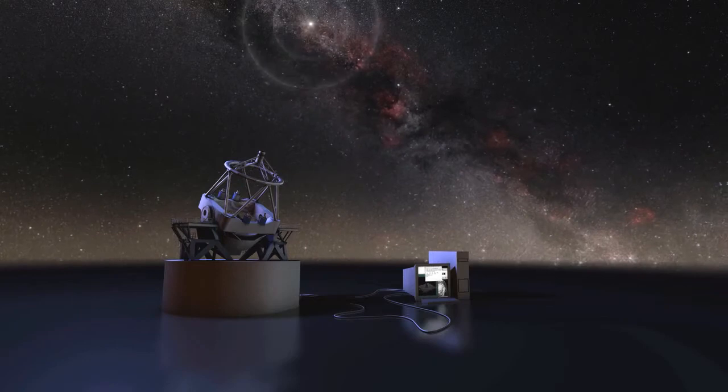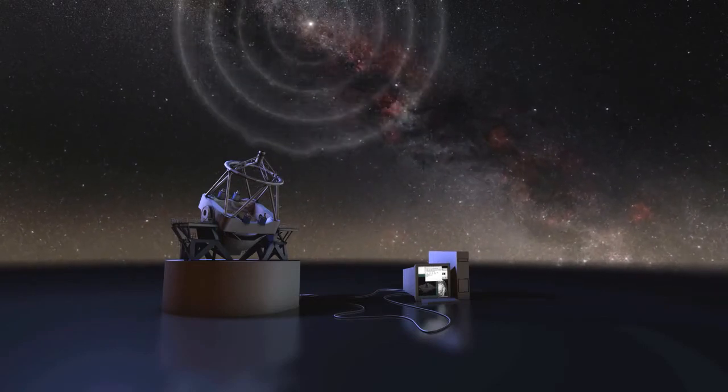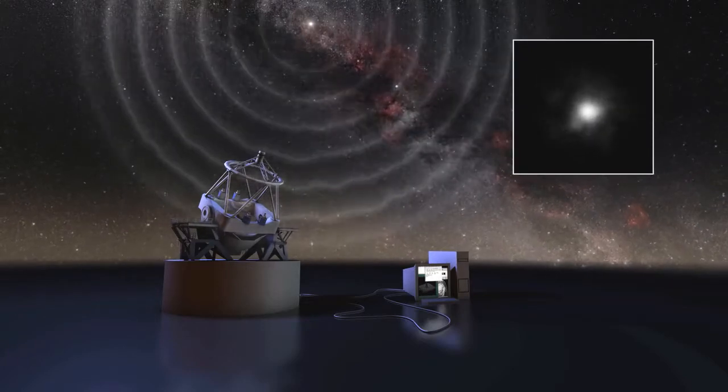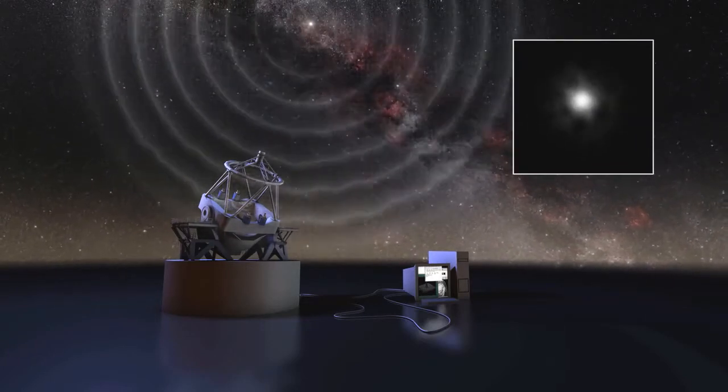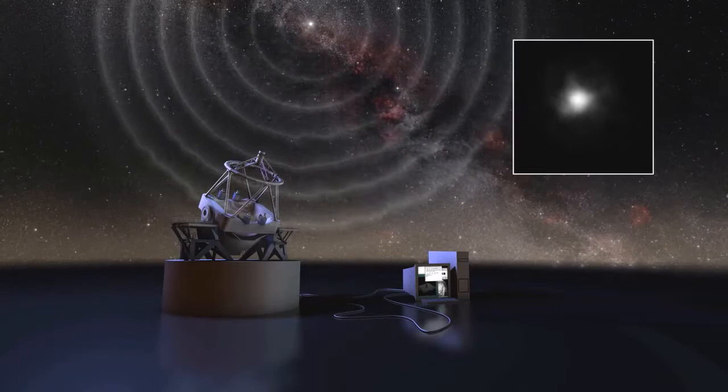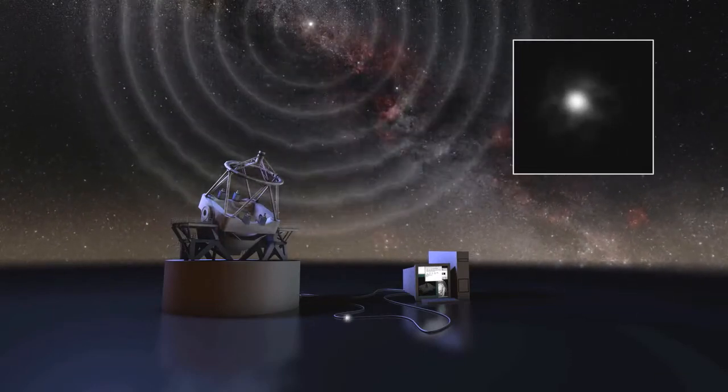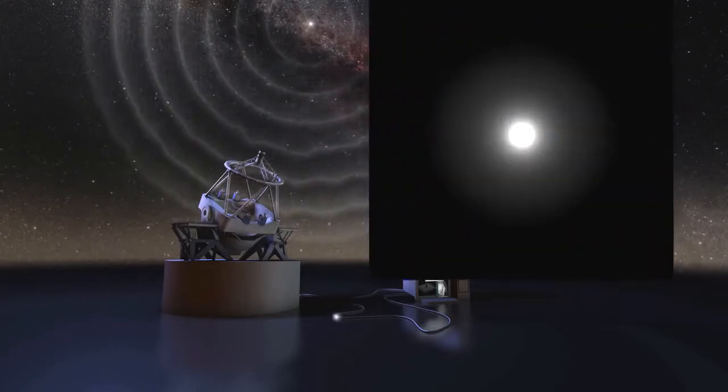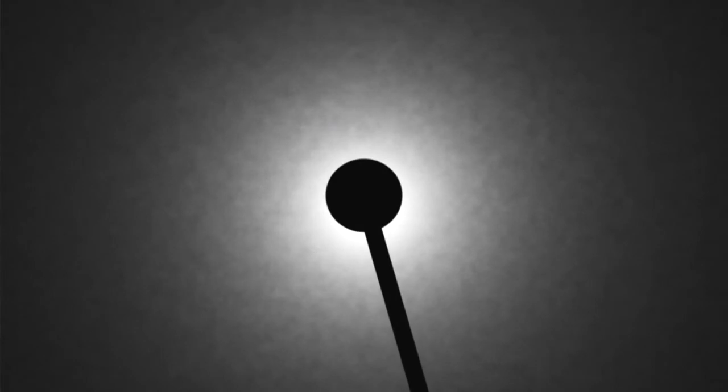But the Earth's atmosphere blurs the view, so we also need a clever optical system, adaptive optics, to take out this blurring effect as much as possible, and bring most of the starlight together into one bright dot. The centre of this bright dot is then blocked out by introducing a mask into the light beam to avoid swamping the fainter nearby objects.